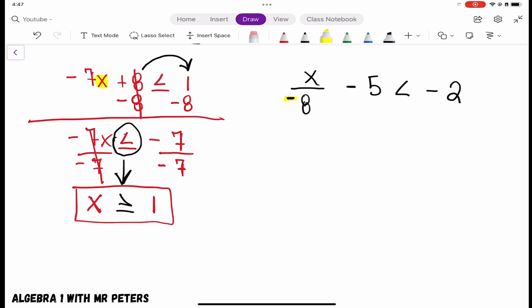So when I go to start solving, same thing. We're going to want to probably bring that 5 over to the other side so we could work on getting the variable by itself. So I add 5, add 5 to both sides. And what I have here is negative x over 8 is less than positive 3.